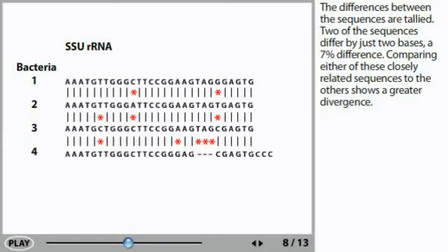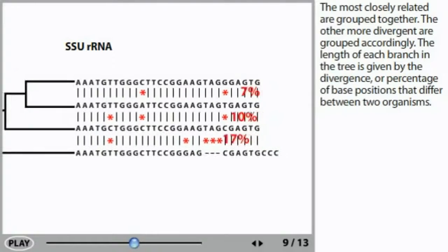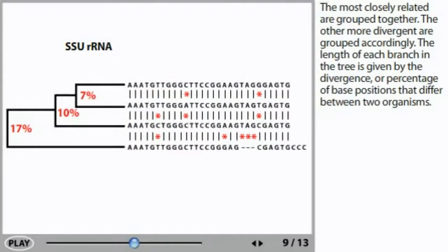The differences between the sequences are tallied. Two of the sequences differ by just two bases, a 7% difference. Comparing either of these closely related sequences to the others shows a greater divergence. The most closely related are grouped together. The other more divergent are grouped accordingly. The length of each branch in the tree is given by the divergence, or percentage of base positions that differ between two organisms.